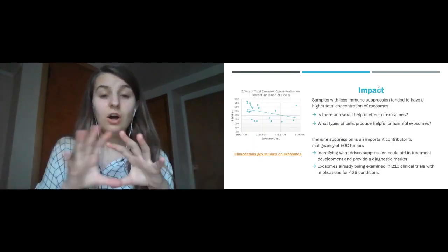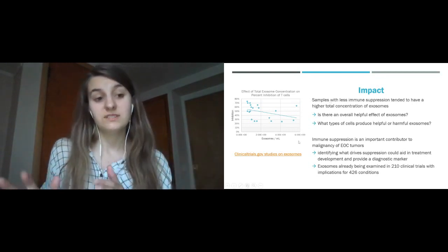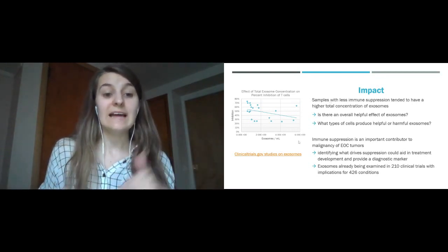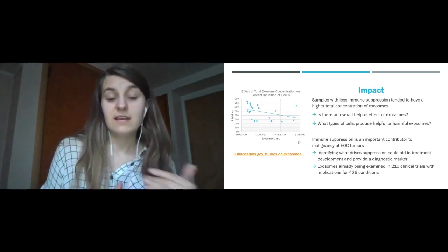So we collected all of the data from the ascites and did see that there was a trend where more exosomes tended to have less T cell inhibition. There wasn't a statistically significant impact here.